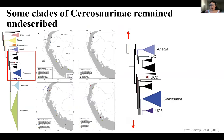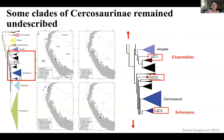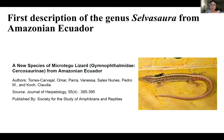Now we're moving to the second genus, Selvasaura. A common problem in the subfamily Cercosaurinae is that some clades remain poorly known and need formal description. In a 2016 study, the authors resolved most relationships in Cercosaurinae but found some lineages that couldn't be assigned to any described genus. Years later, UC1 was described as a new genus named Euspondylus, and in 2018, UC3 was described as a new genus named Selvasaura. In 2021, we did the first description of the genus Selvasaura from Amazonian Ecuador — the first record of this genus in Ecuador.